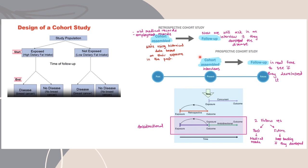The last type is ambidirectional, which combines prospective and retrospective. Using the Nagasaki example: we collect the same historical data as in the retrospective study, but the catch is that we also follow up with the individuals to see if they develop lung cancer, since some may not develop it immediately. This gives better and more accurate data, although it takes more time. You keep following up with the subjects whether or not they develop lung cancer.